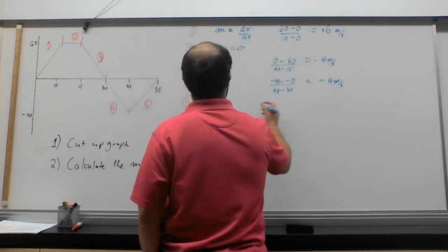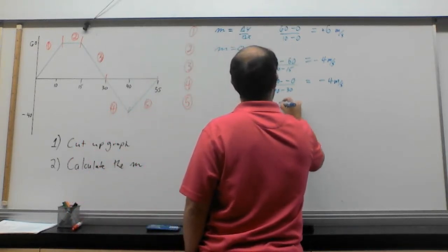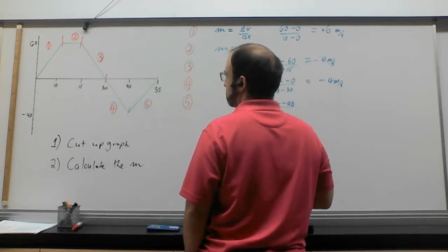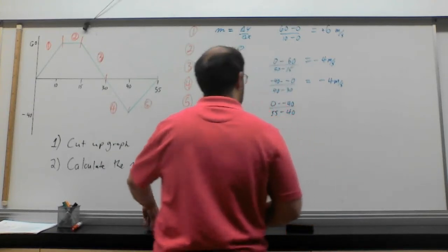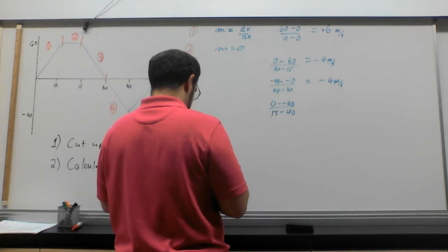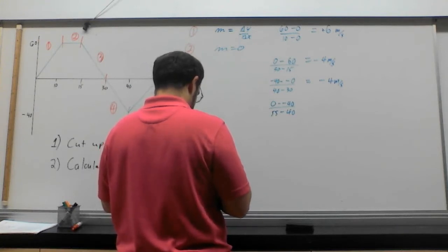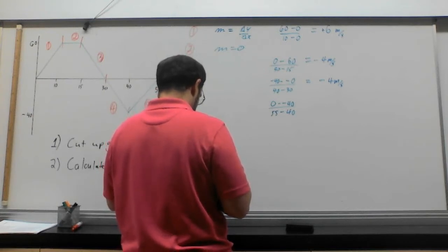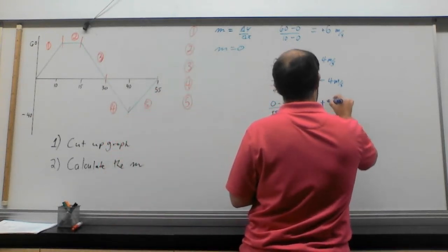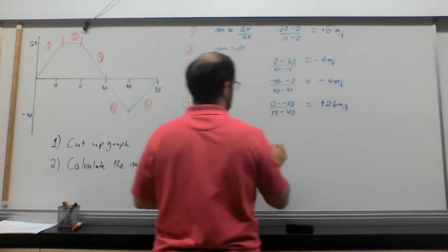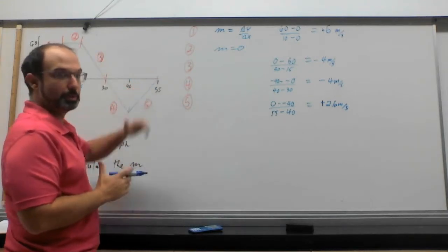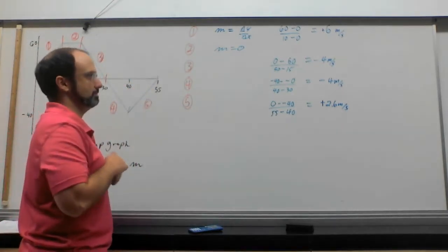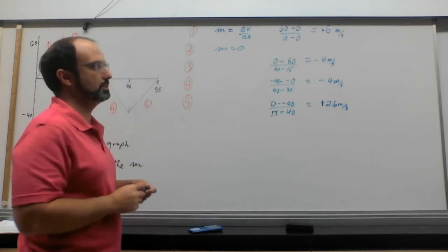Five, it's going to be negative 40 is the initial position, minus zero over, we're looking at here, 50 to 40. So 55 minus 40. So we're going to get 40 divided by 15 or so. So we're going to get positive 2.6 meters per second. It's positive because, of course, I'm subtracting a negative, and because I can clearly see this is a positive slope here. Okay, so we now have our information. These numbers are what we were going to need in order to do this.